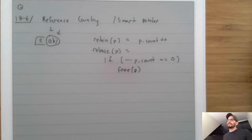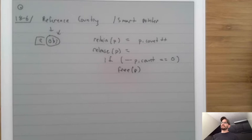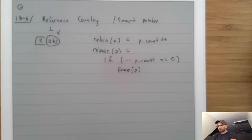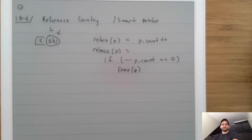Reference counting can be done manually — calling retain and release yourself — or integrated into the language, which automatically calls them. Modern Objective-C and Swift have reference counting built into the language, tracking objects going in and out of scope. C++ with STL smart pointers uses operator overloading to do it automatically. In C you'd have to do it manually. Python uses reference counting behind the scenes, inserted manually by the Python implementers.